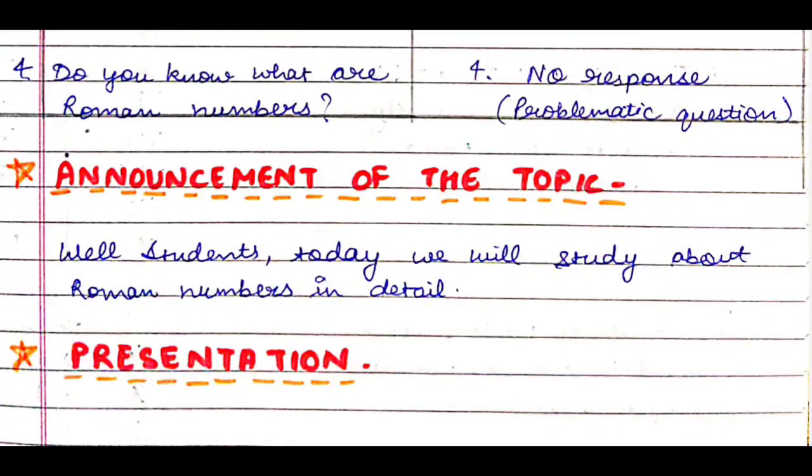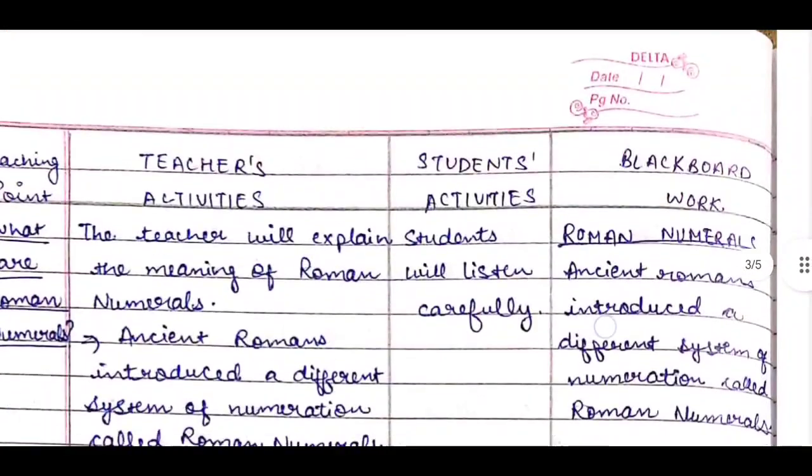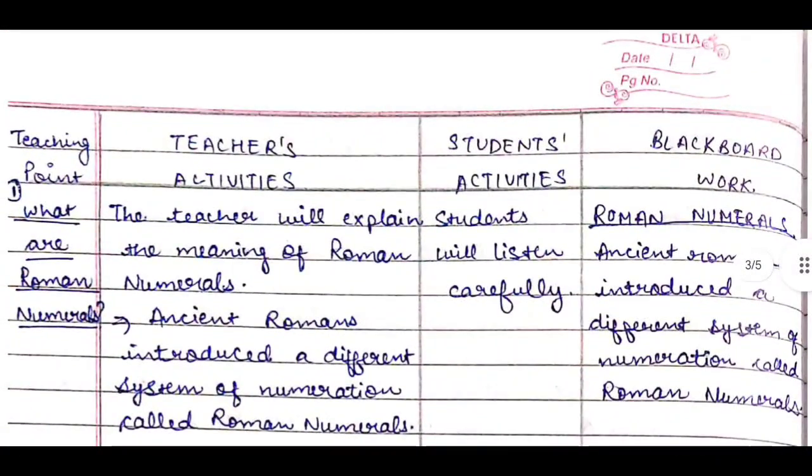Then next topic comes presentation. Now this is the actual and the main part of the lesson plan, wherein we make four columns. First is teaching point, second teacher's activities, third is student's activities, and fourth is blackboard work. You can also make a fifth column that is teaching method—you can write which teaching method you are using, whether theory method, activity-based method, or experiment method.